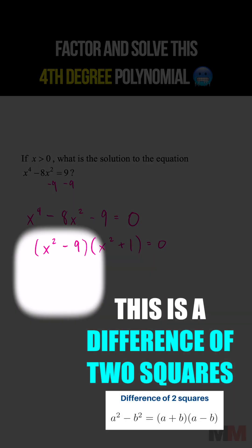x squared minus 9 is a difference of two squares, because 9 can be written as 3 squared, which then factors to x plus 3 and x minus 3.